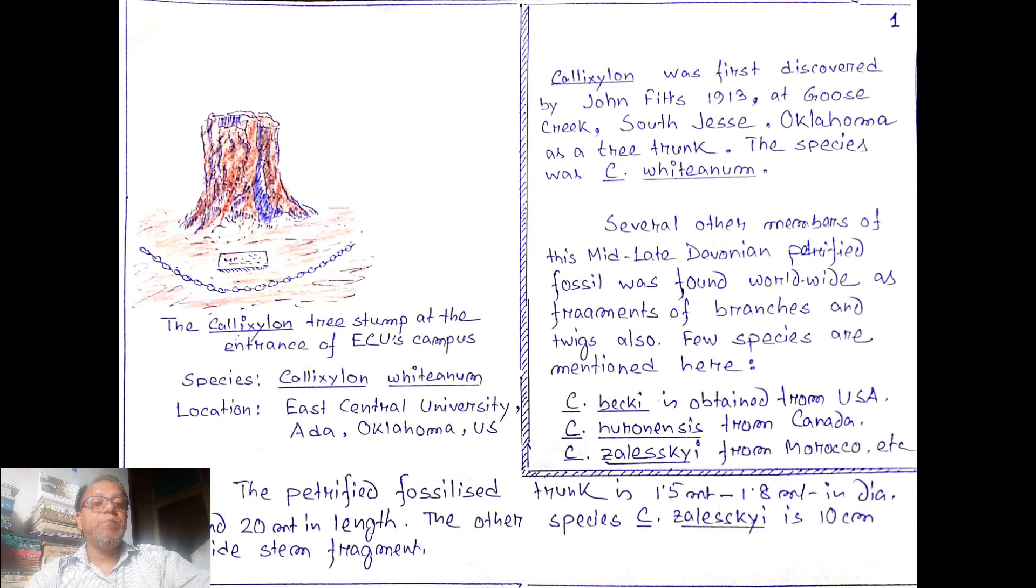This plant was first discovered by John Fitts in 1913 at Goose Creek, South Jersey, Oklahoma as a tree trunk. The species was Callixylon whiteanom. Several other members of this mid-late Devonian petrified fossil were found worldwide as fragments of branches and twigs also. Few species are mentioned here.